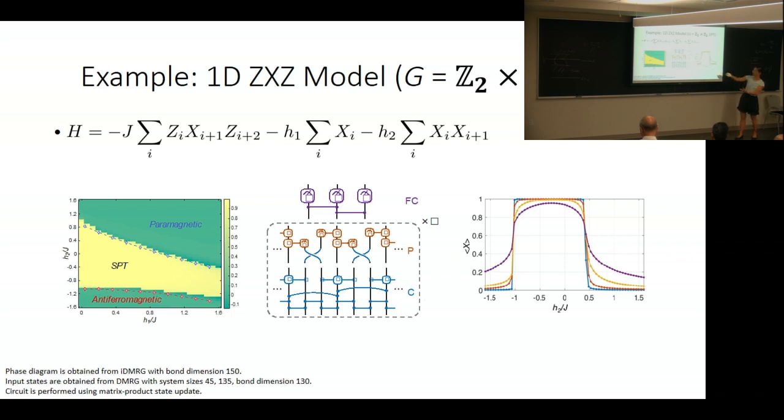The colors indicate the probability of the final qubit measurement. This is an example of one of the cuts along the phase diagram.